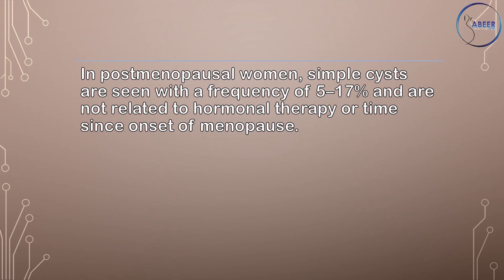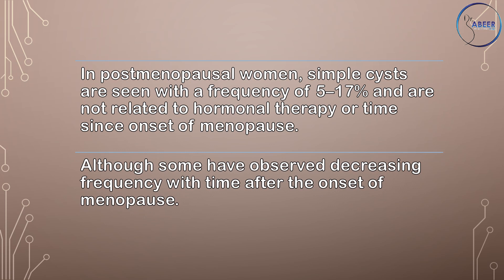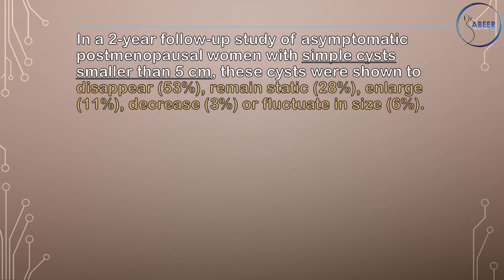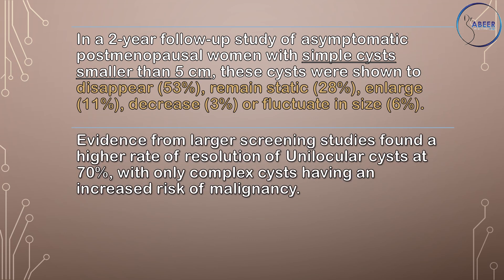In postmenopausal women, simple cysts are seen with a frequency of 5–17% and are not related to hormonal therapy or time since onset of menopause. In a two-year follow-up study of asymptomatic postmenopausal women with simple cysts smaller than 5 cm, these cysts were shown to disappear (53%), remain static (28%), enlarge (11%), decrease (3%), or fluctuate in size (6%). Evidence from larger screening studies found a higher rate of resolution of unilocular cysts at 70%, with only complex cysts having an increased risk of malignancy.